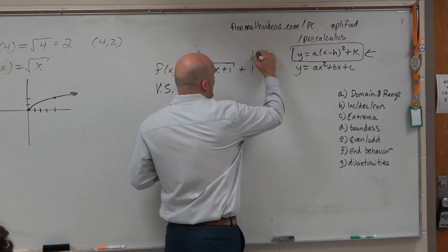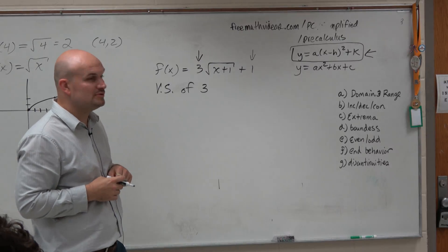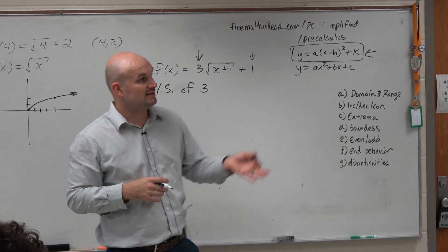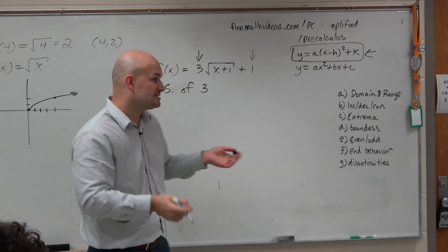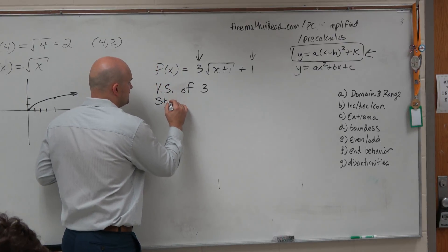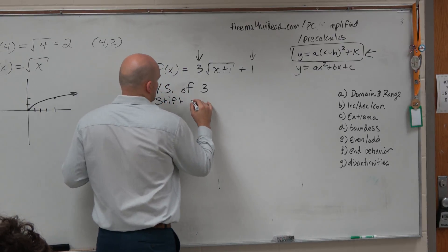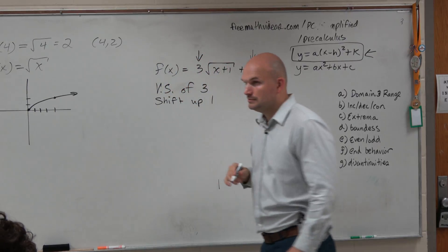The next thing is I notice my other value that's outside of my function, which is the plus 1. So I think, oh, outside of 1, that's my d. Since it's positive, that means it's going to shift the graph up 1. Right?